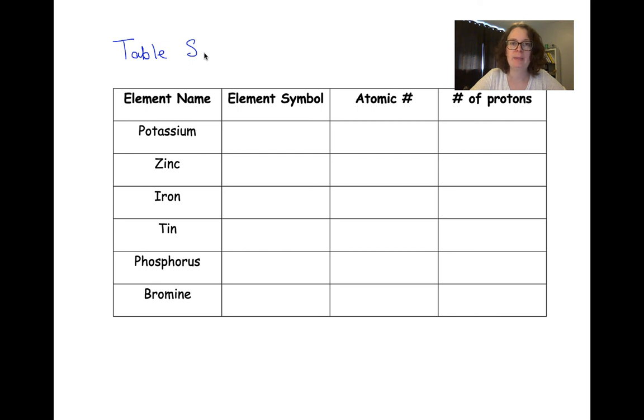If we go to Table S and we look up potassium, we'll see that the element symbol for potassium is a capital K. This might seem a little bit weird, but a lot of elements have symbols that don't match up directly with their names. So it's important to check that Table S if you're not 100% sure of what the symbol might be. If we look at the potassium on the periodic table, its atomic number is 19, and its number of protons is also 19.